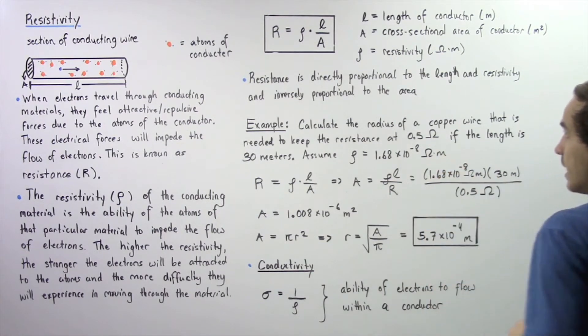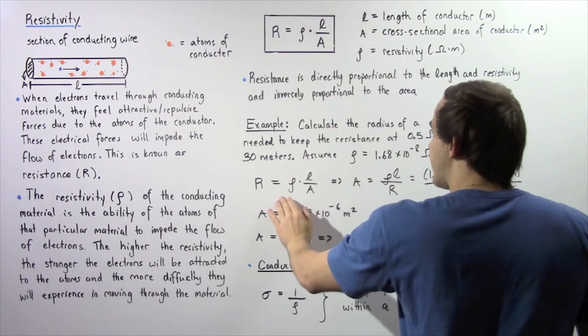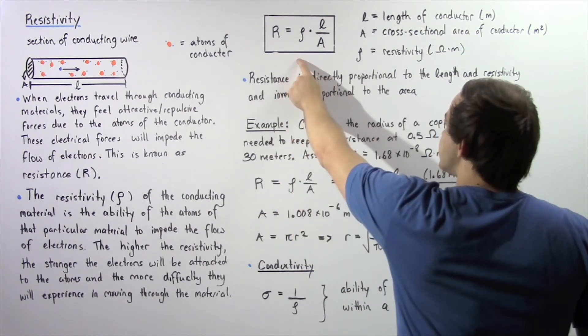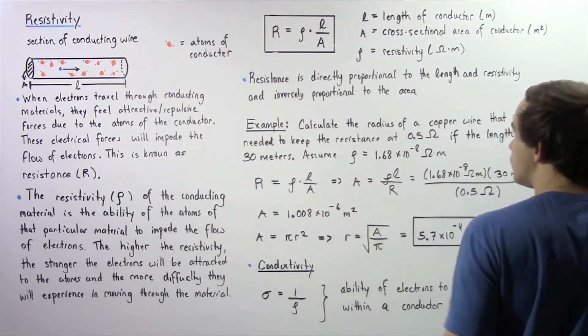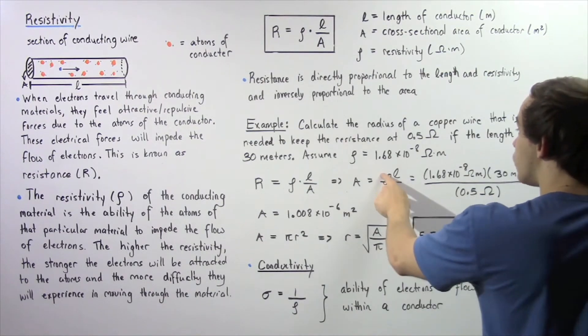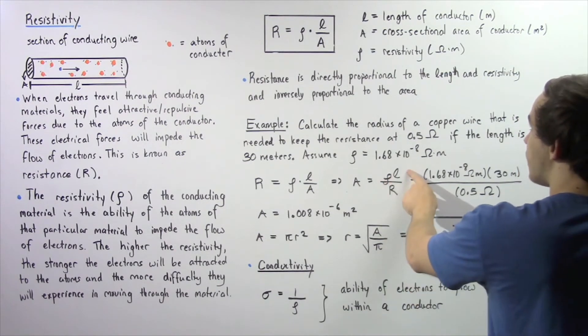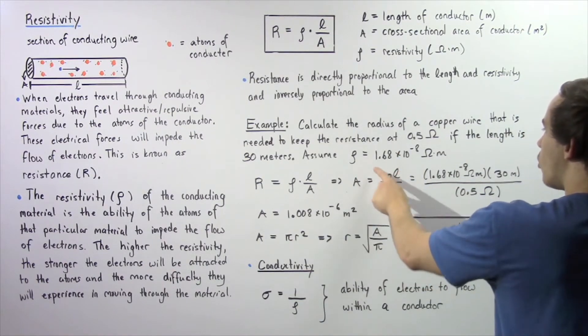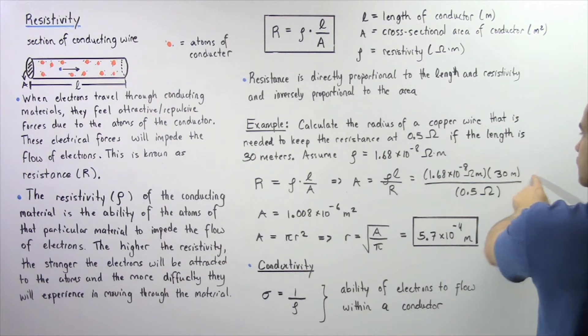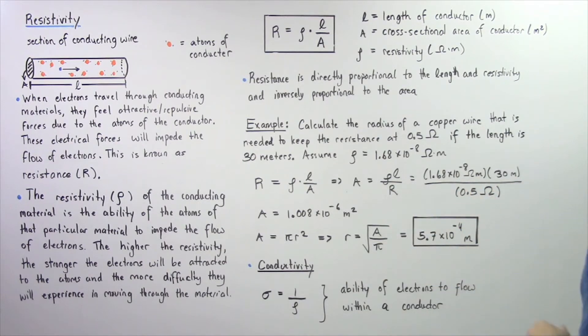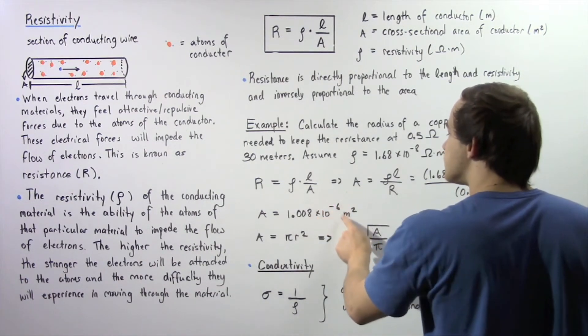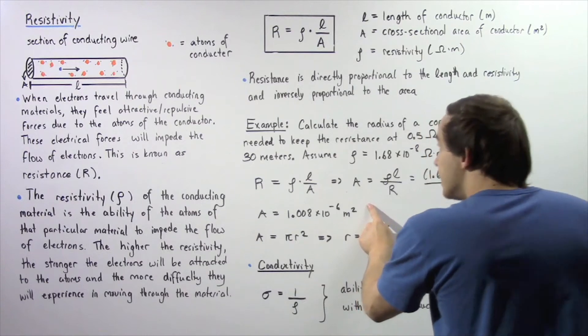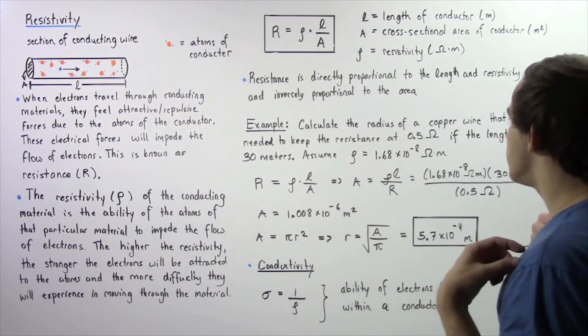We begin with this equation and rearrange it to solve for A. The A equals ρ multiplied by L divided by R. Our ρ is this quantity, our length is 30 meters, and our R is 0.5 ohms. We multiply, divide, and we get 1.008 × 10⁻⁶ meters squared.